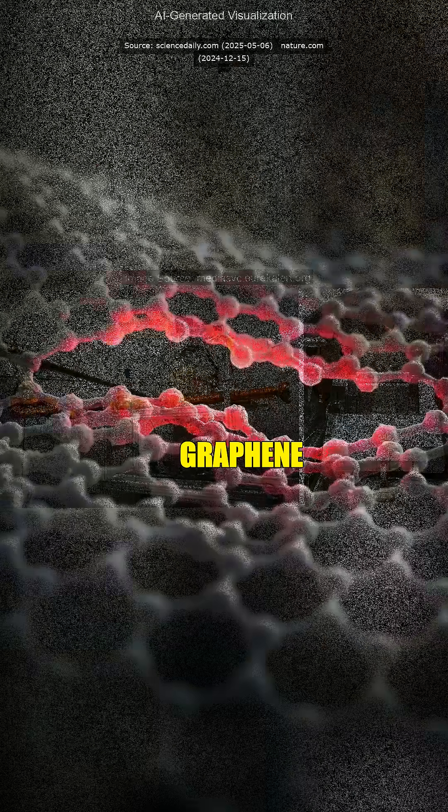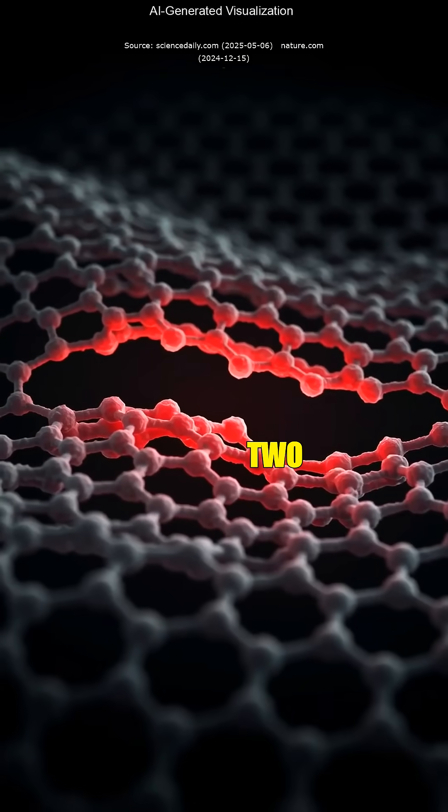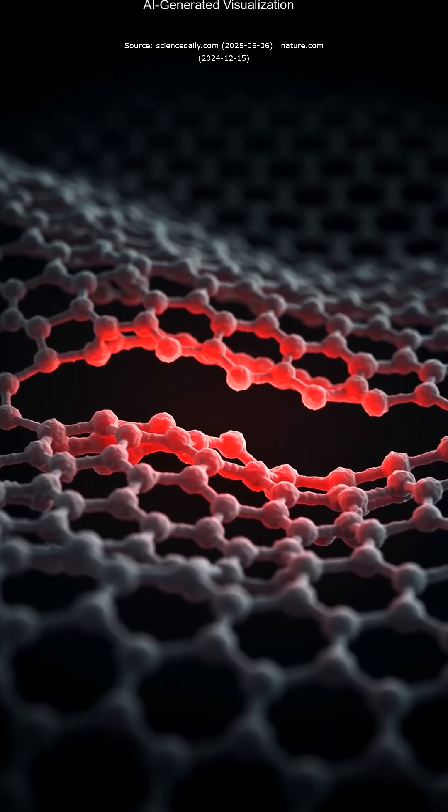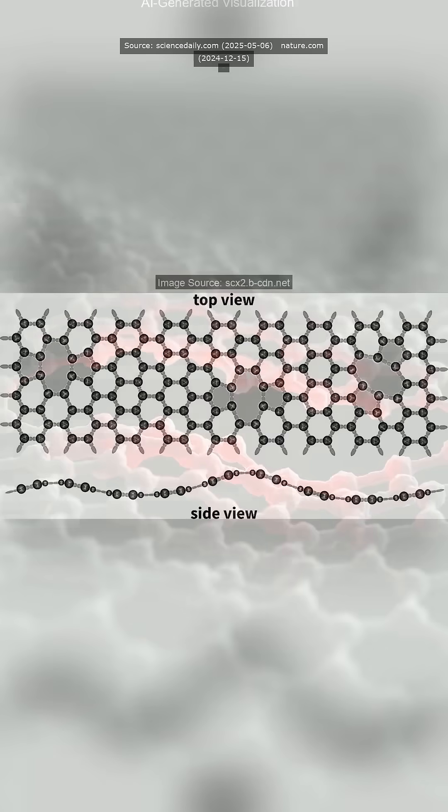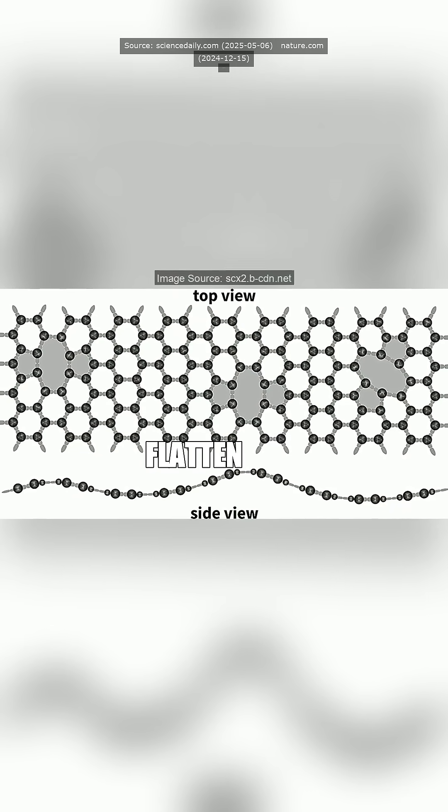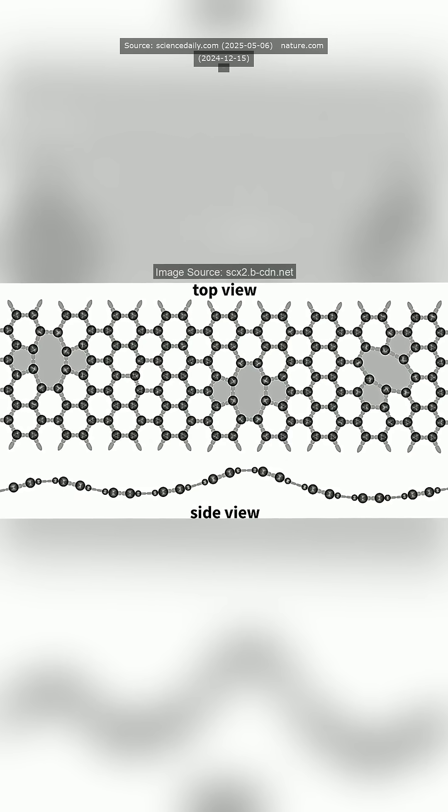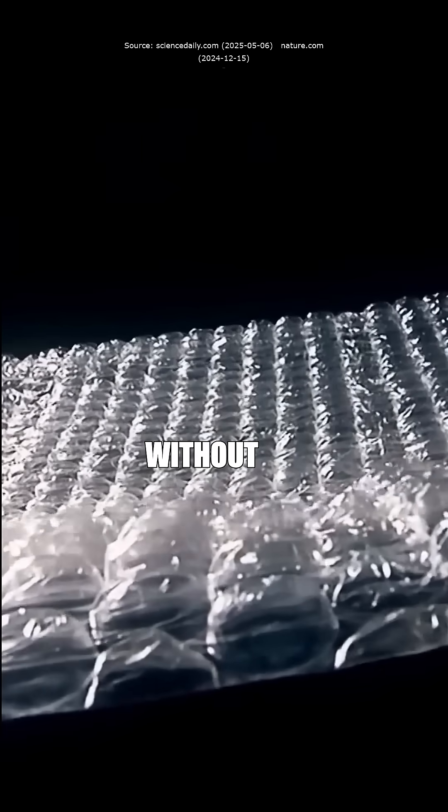Wait, you're saying graphene gets wavy just by losing two atoms? Bollocks, that's mad! Yup, exactly. These tiny waves flatten out easily when stretched, making graphene much more flexible without losing strength.